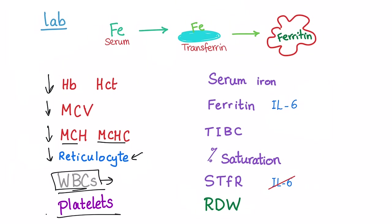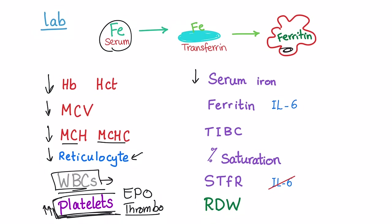White blood cells are usually normal — there is one exception I'll mention later. Platelets may show a slight increase. This may be because erythropoietin is very similar to thrombopoietin, or because in anemia the blood is very thin so the body tries to compensate by producing more platelets since it cannot produce enough RBCs.